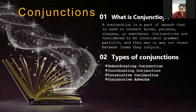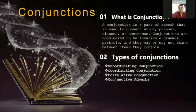As a connecting word within a sentence, it serves as a linker. The second topic is types of conjunction — jenis dari conjunction. Types of conjunction include: subordinate conjunction, coordinating conjunction, correlative conjunction, and conjunctive adverbs.